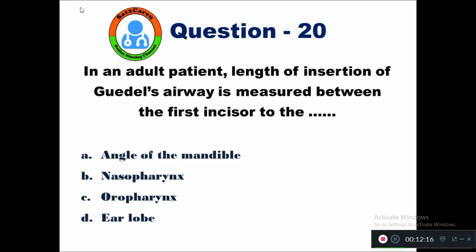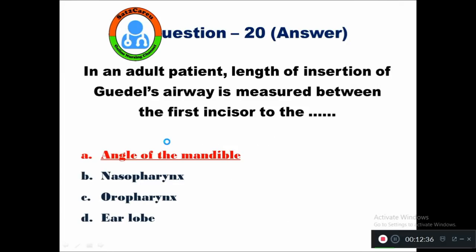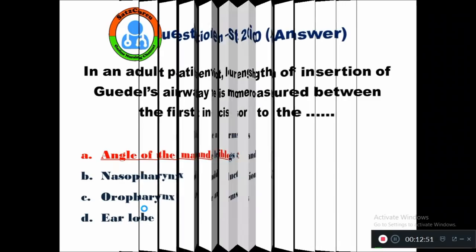Question 20: In an adult patient, the length of insertion of Guedel's airway is measured between the first incisor to — option A angle of the mandible, B nasopharynx, C oropharynx, D earlobe. The right answer is the angle of the mandible. We measure the distance of Guedel's airway between the first incisor to the angle of the mandible.